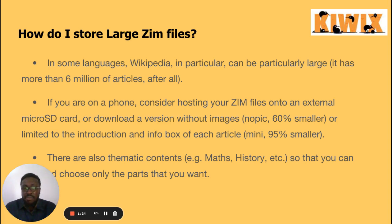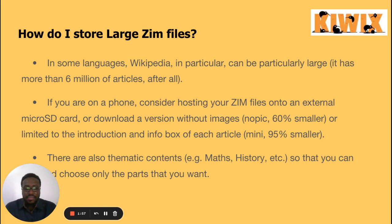In some languages, Wikipedia in particular can be very large — it has more than six million articles. Depending on the quantity of information you need, the larger the size, which we also have to take into account. In the English language it has six million articles, and some of these articles come with media attachments, which increases the storage size.